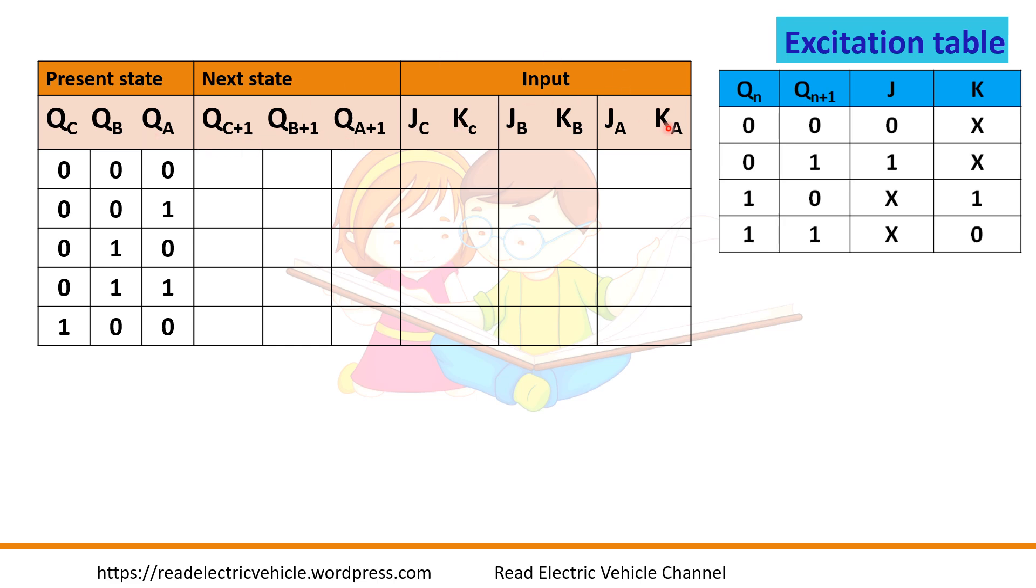And this is the input combination for the 3 flip-flops. So present state, we have 5 combinations: 0, 1, 2, 3, 4. After 4 I have to go back to 0.